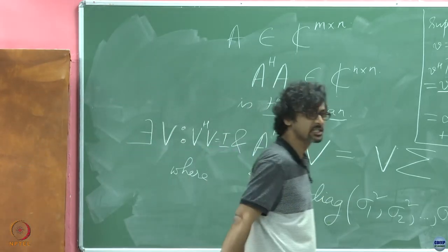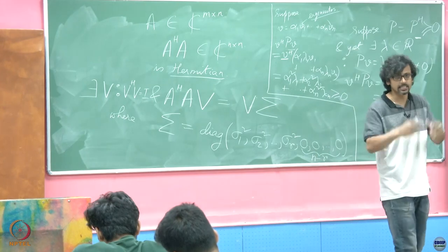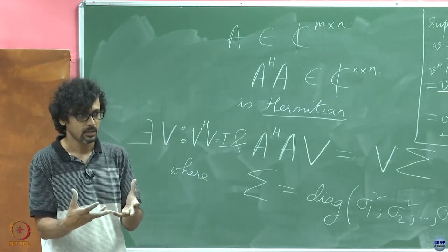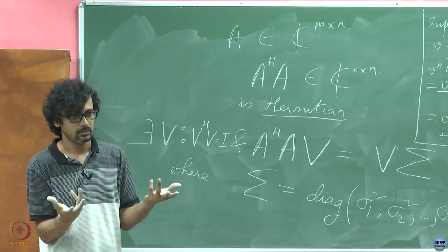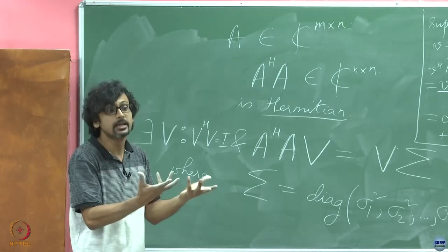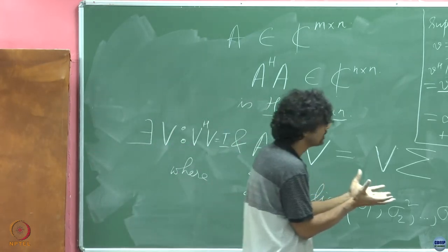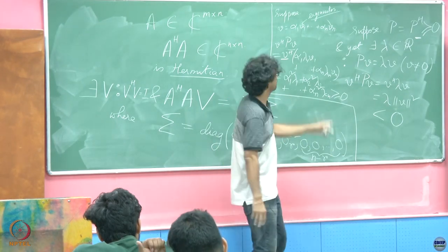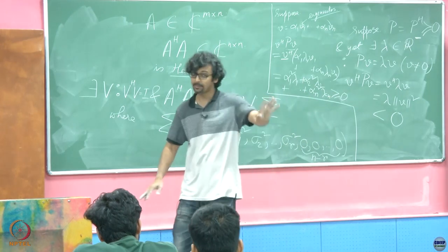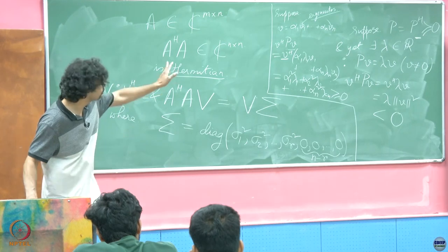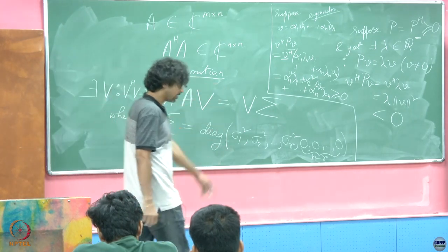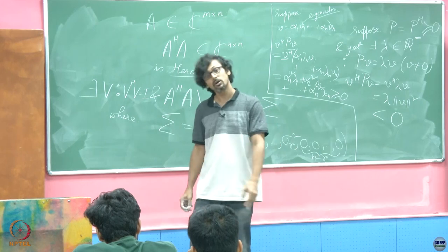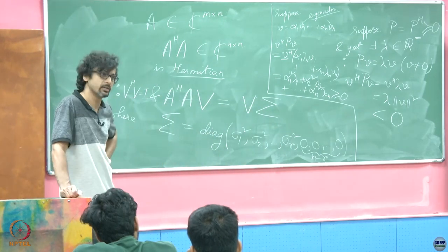Now go back to that least squares problem and the Hessian — we spoke about why the sign of the Hessian matters. If it is positive definite, it's a minima. So checking for positive definiteness of the Hessian is akin to just checking that eigenvalues are all positive, instead of checking for every possible vector in every possible direction. Non-negativity of eigenvalues is not just a necessary but also a sufficient condition for positive semi-definiteness of a symmetric matrix.